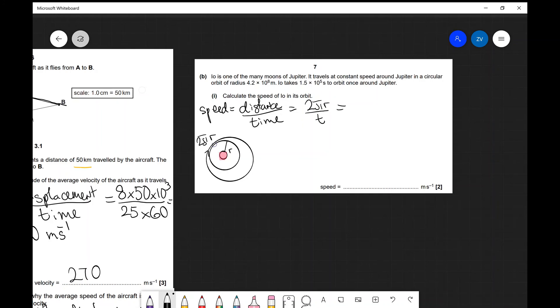So this is going to equal 2π multiplied by 4.2 times 10 to the power of 8 and what I'm going to do is divide that by 1.5 times 10 to the power of 5.